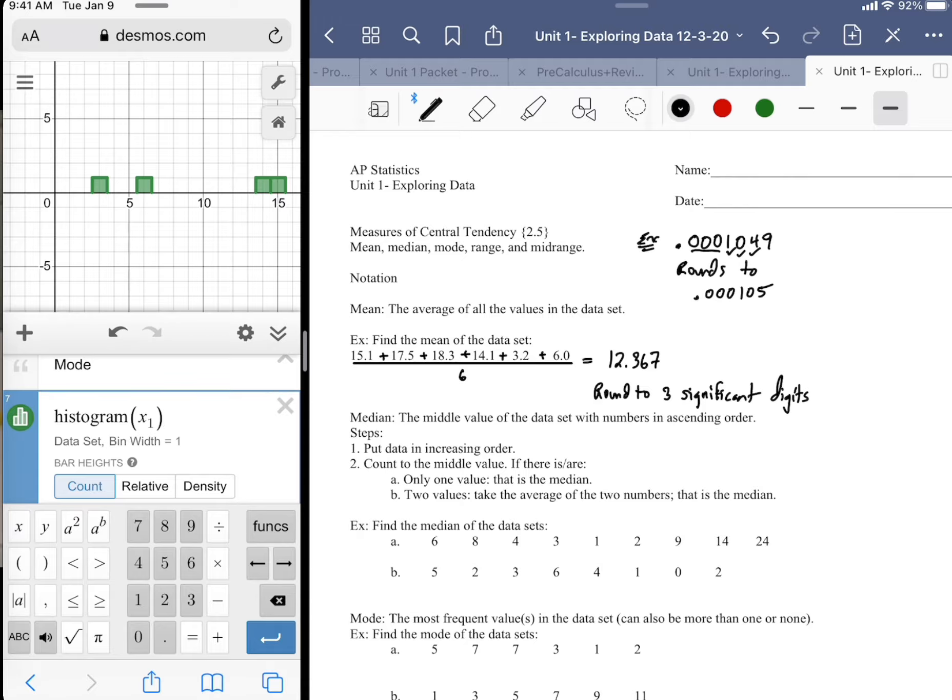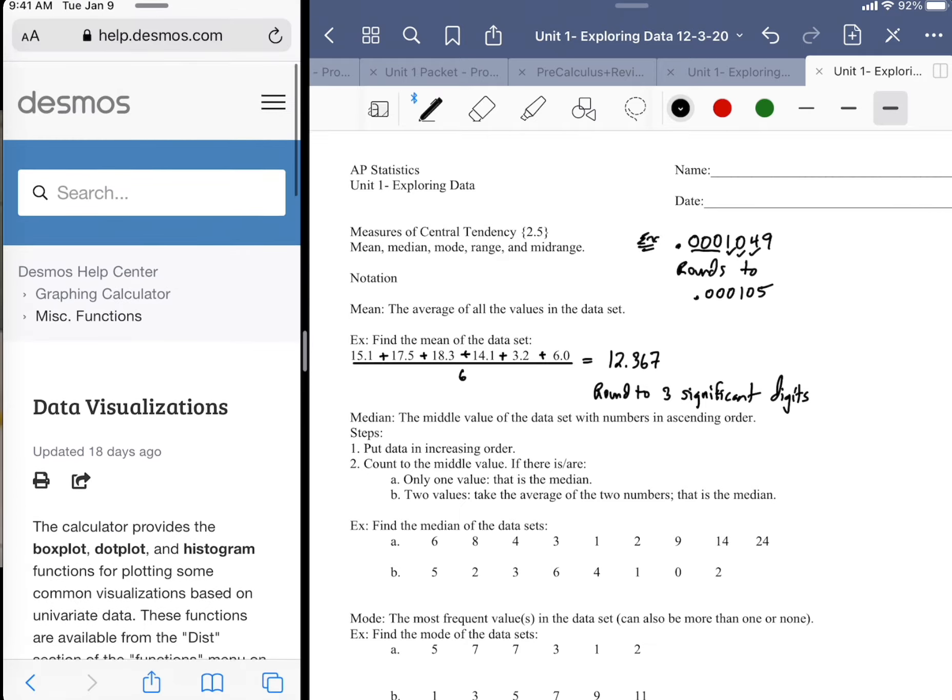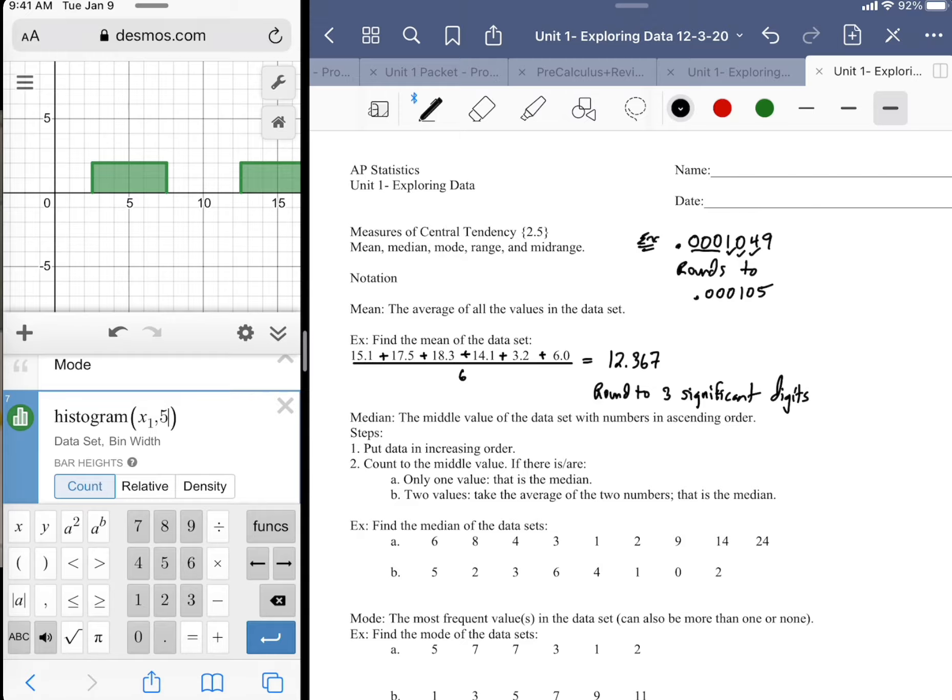X1. It asks you for a few things, like the bin width, how you want to represent the bar height. If you're unsure of something, you just tap on a little question mark and it'll bring up a little cheat sheet for you. But if you're going by bin width of one, you see it put a little comma one right after the X1. If I want to make it go by more than just one unit, I might hit something like five and let it group the data by fives.